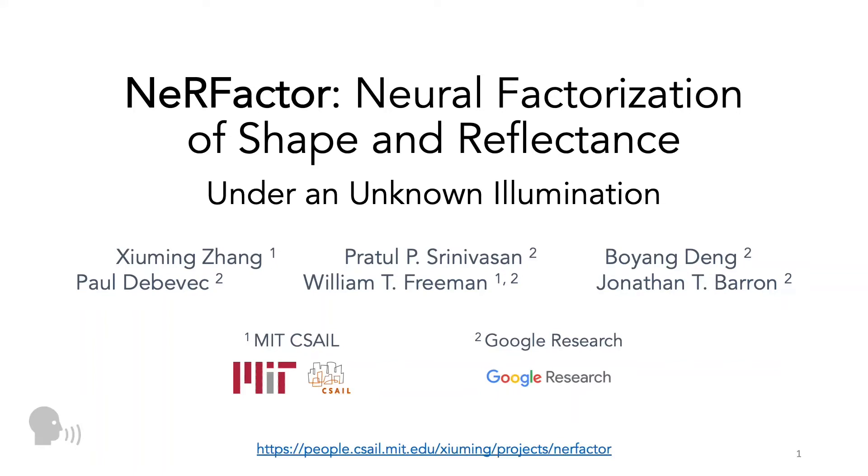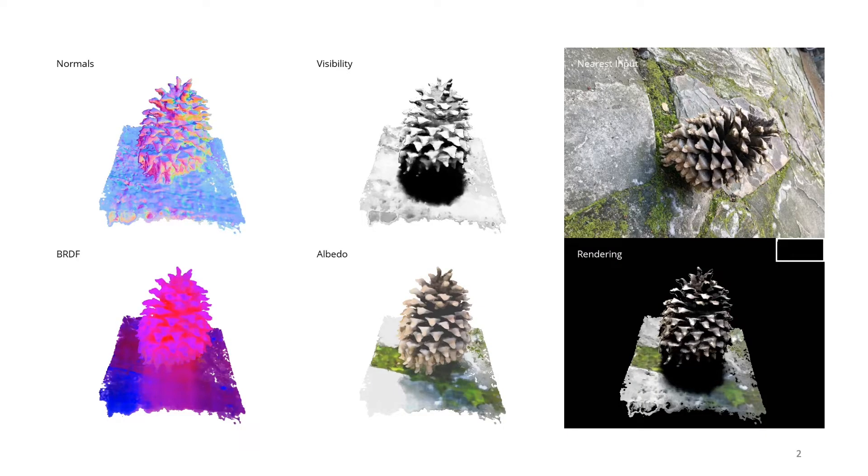NeRFactor: Factorization of Shape and Reflectance under an Unknown Illumination. Given a set of images and their camera poses, NeRFactor decomposes the scene's appearance into 3D fields of surface normals, light visibility, albedo, and spatially varying BRDFs.